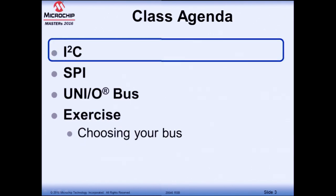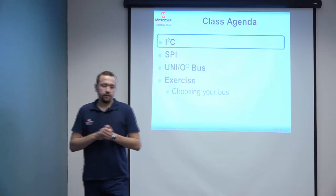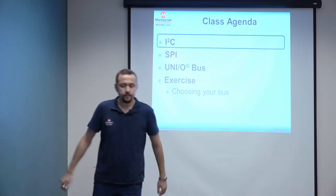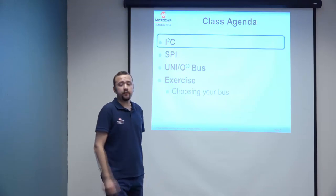This is the class agenda. We'll be starting off with I2C, then moving on to SPI, and then going to the UNIO bus, which is one of our proprietary buses. To wrap it up, we're going to have an exercise where we'll be encouraged to evaluate whether we can employ one bus or the other for a specific given use case. Without further ado, let's move into the I2C bus.